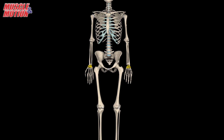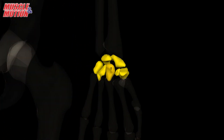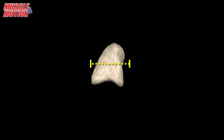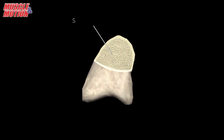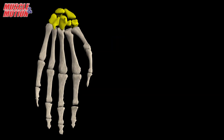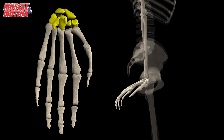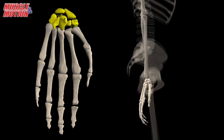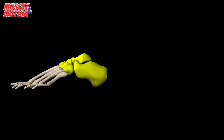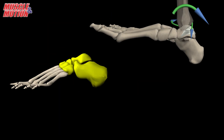Next we have the short bones. Short bones are called that because they are about as wide as they are long. They consist primarily of spongy bone tissue, which is covered by a thin layer of compact bone. Short bones include the carpal bones of the hands that allow movement of the wrist, and the tarsal bones of the feet that enable ankle movement.